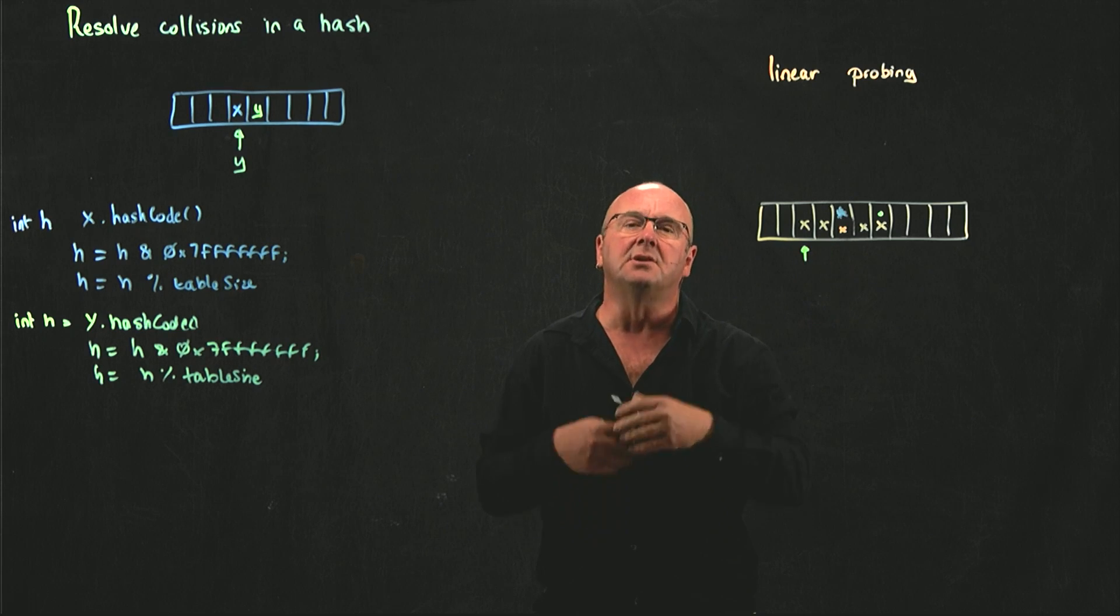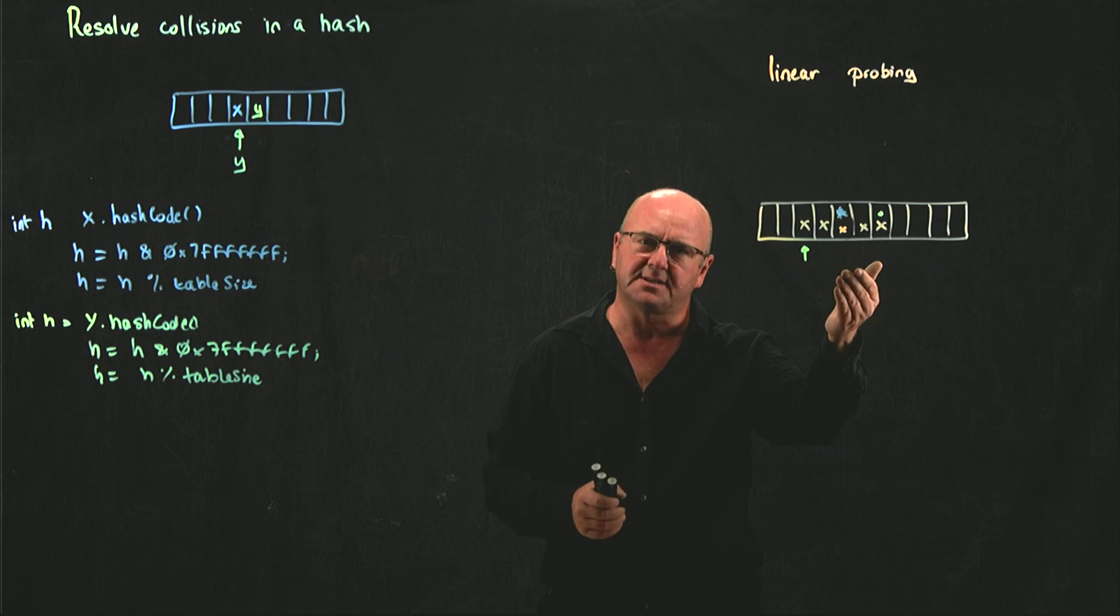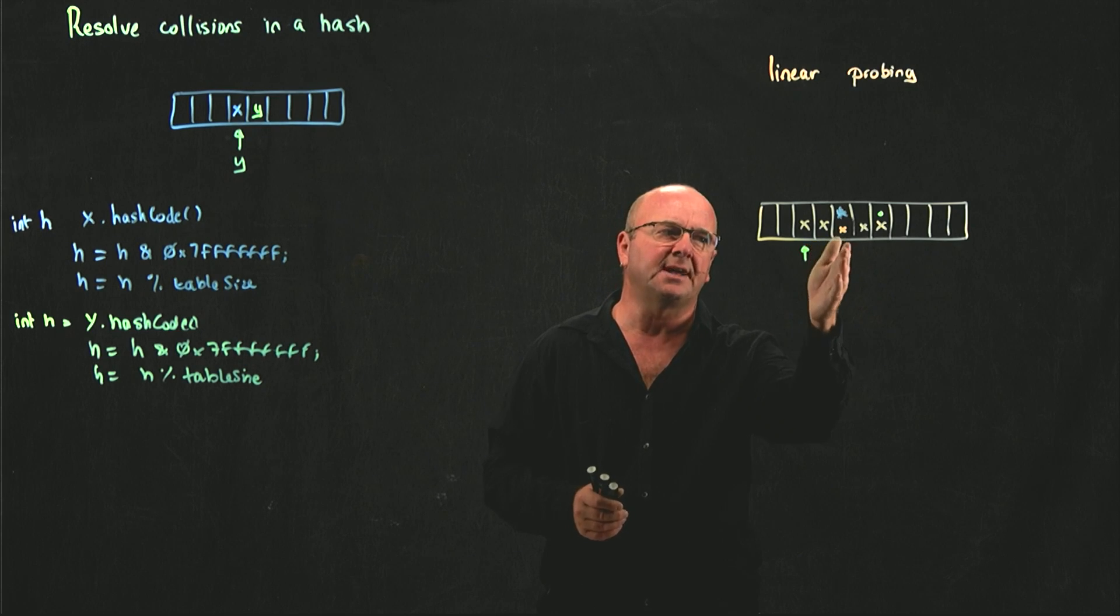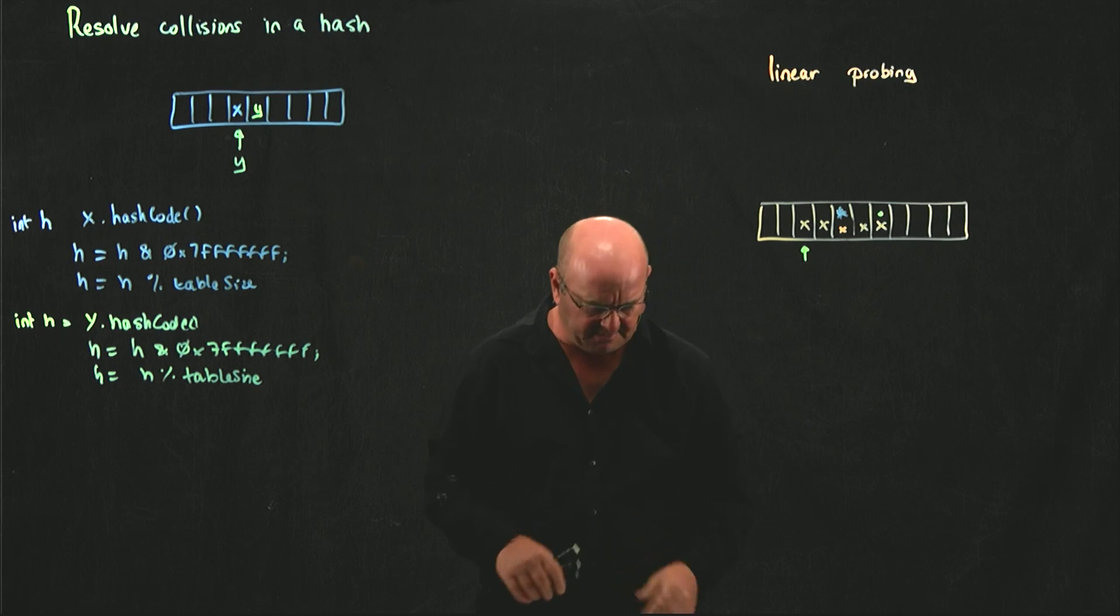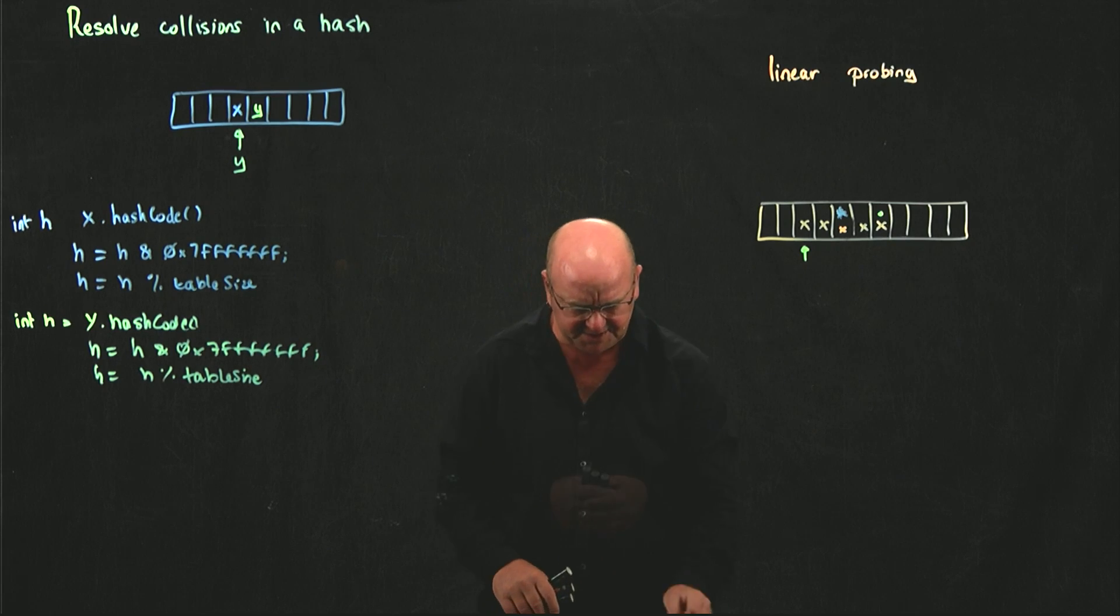But it's more complex when we're trying to remove something, or when we're trying to check that something's there, because we have to account for the fact that it may be further down in our data structure.